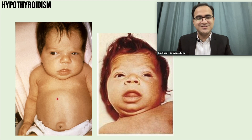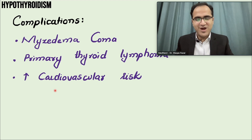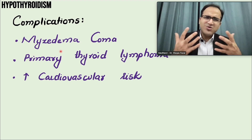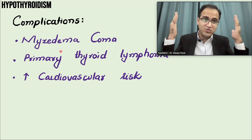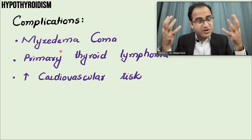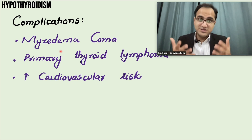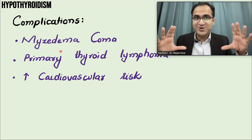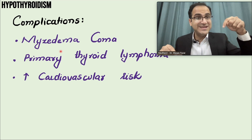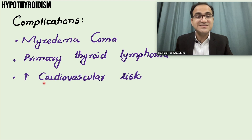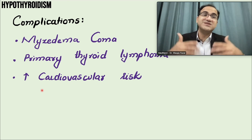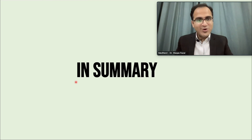This image shows a patient with congenital hypothyroidism — note the large tongue, puffy face, pallor, and protuberant belly. Complications of hypothyroidism include myxedema coma: a small illness like a UTI or respiratory infection can trigger myxedema encephalopathy and coma with severe thyroid hormone deficiency. Other complications include primary thyroid lymphoma (especially in Hashimoto's thyroiditis) and increased cardiovascular mortality due to hypercholesterolemia.